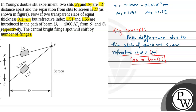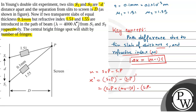Before we introduce the slabs, the initial path difference x equals H2P minus H1P. After the slabs are introduced, the new path difference x' equals H2P' minus H1P'. So H2P' equals H2P + (μ2 − 1)T, and H1P' equals H1P + (μ1 − 1)T. Therefore x' equals (H2P − H1P) + (μ2 − μ1)T.